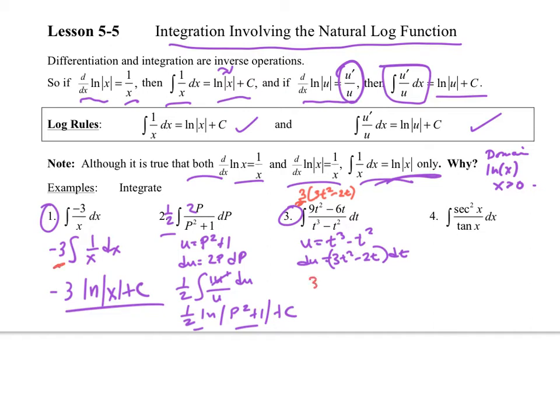So what I do is I go 3, and then the antiderivative of 1 over u du. And then that just becomes 3 ln. And then what is my u? t cubed minus t squared plus c. There it is.